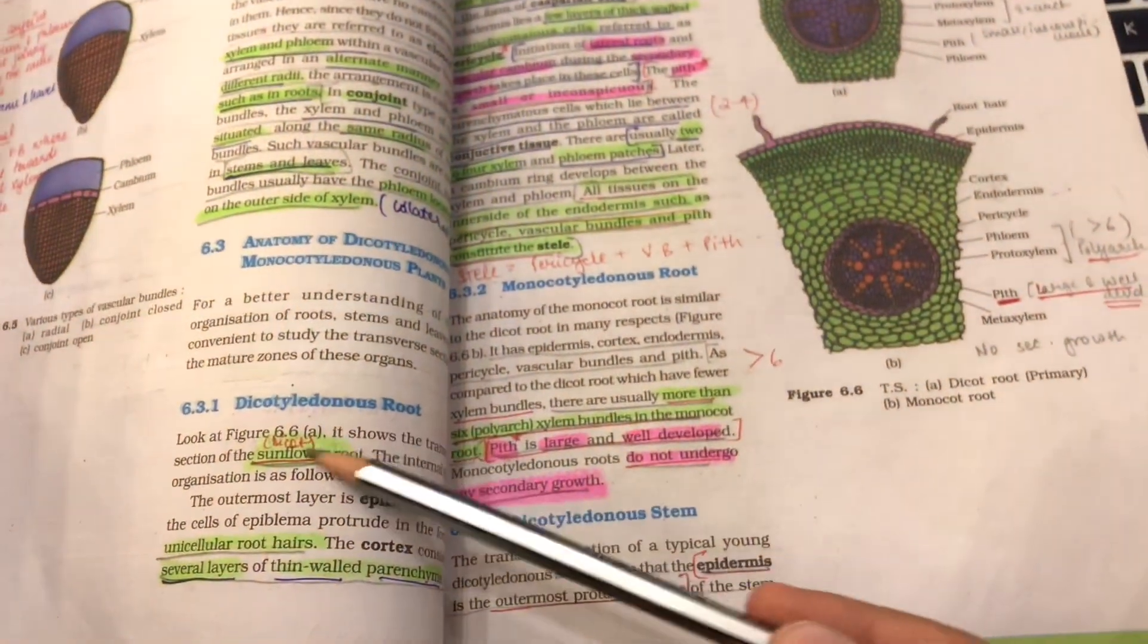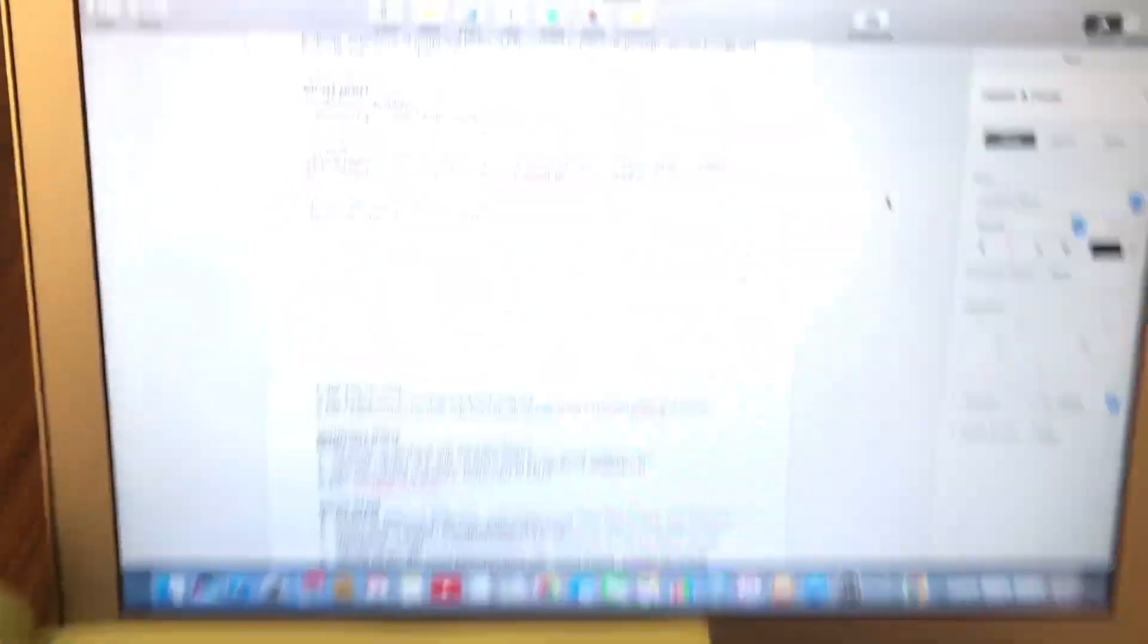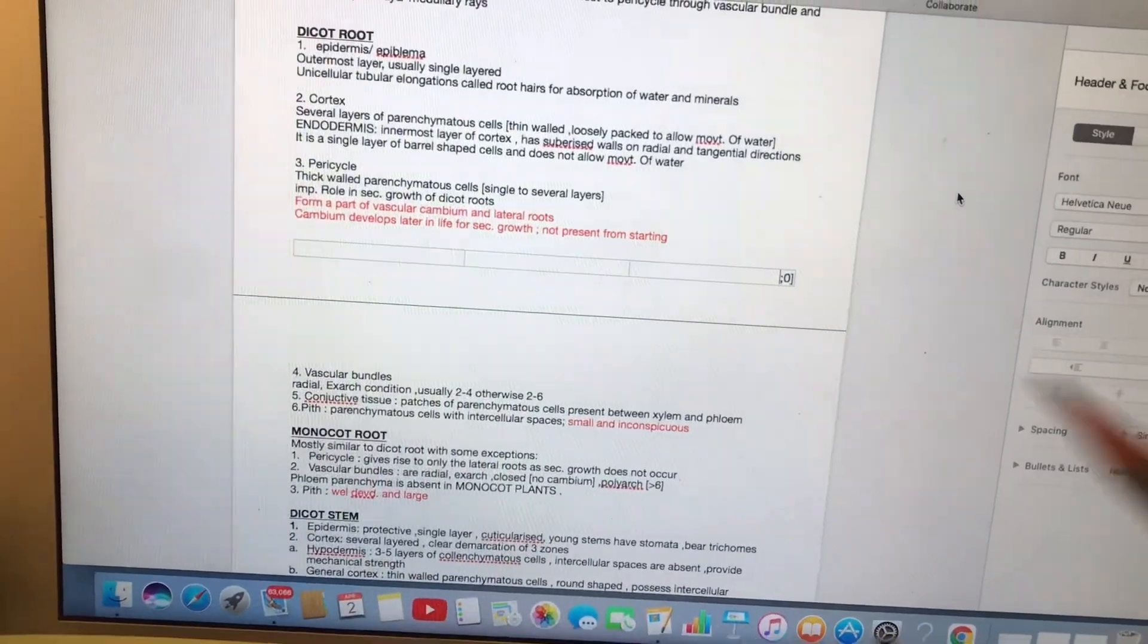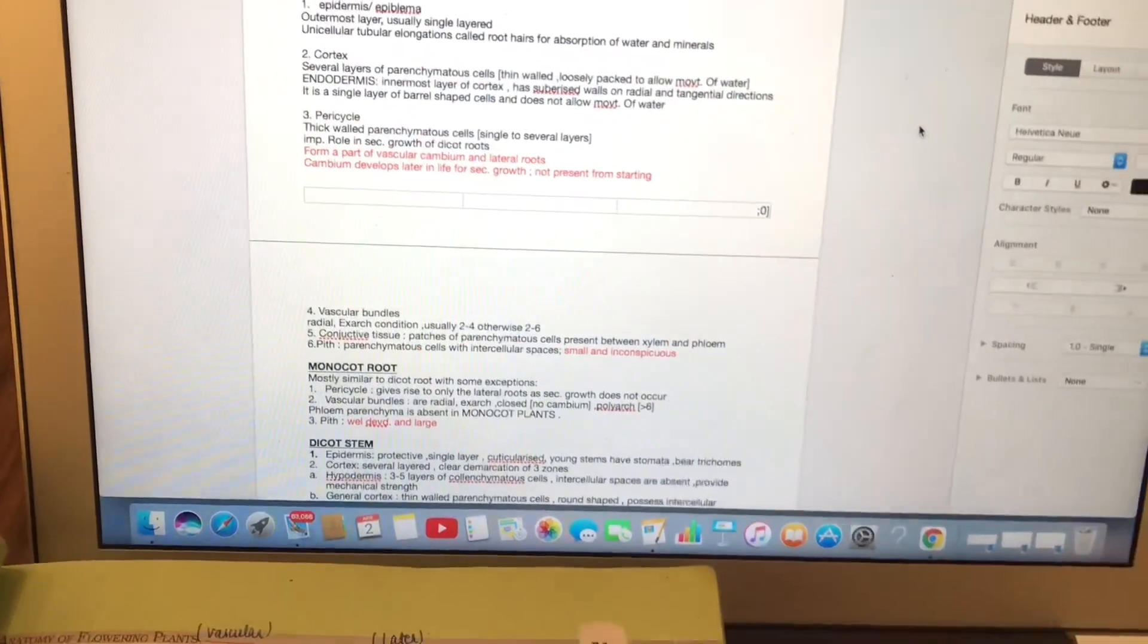For example, in anatomy, I read the paragraph related to dicot root and I highlighted the important points. And then, I wrote it down here. Like this, I did it for every paragraph.